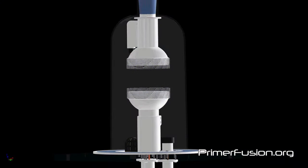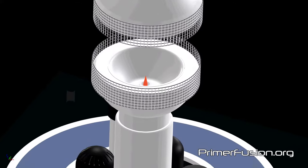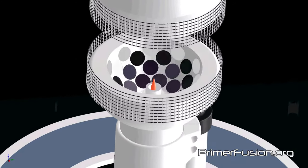Here we see the basic design of a Primerfusion reactor. The bottom half of the reactor contains a bowl-shaped magnetic array.